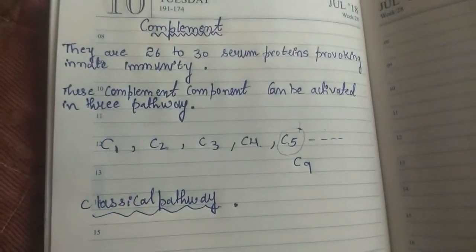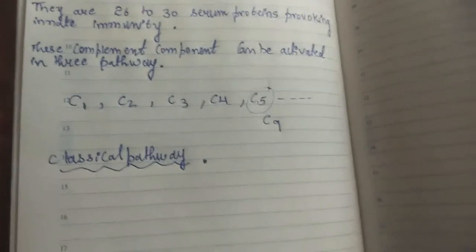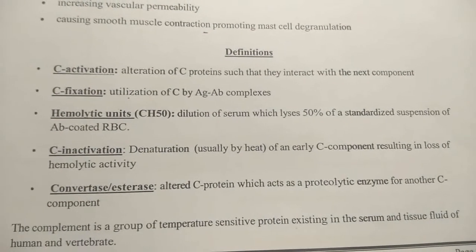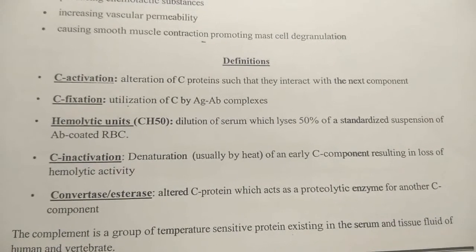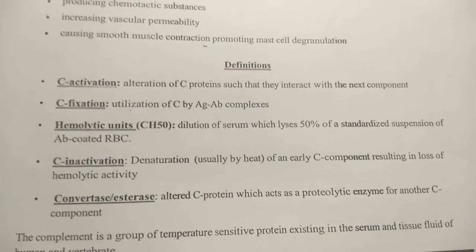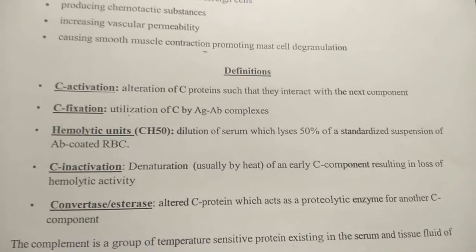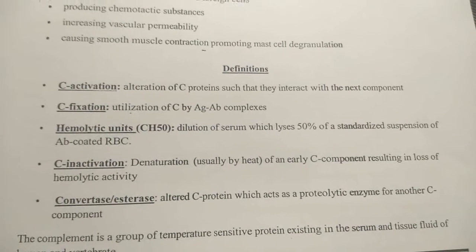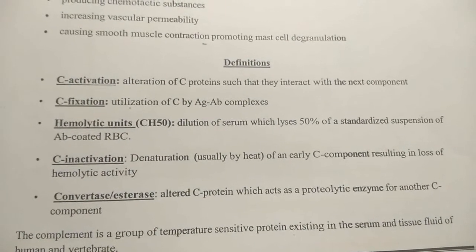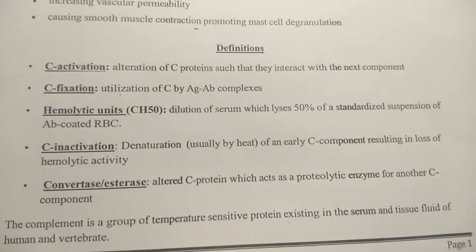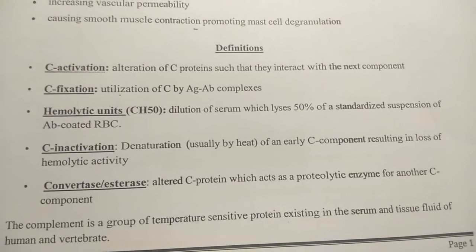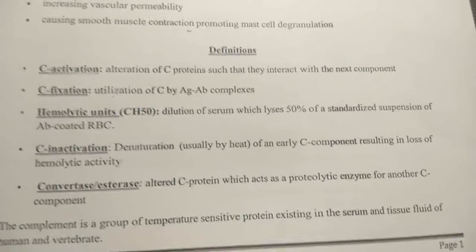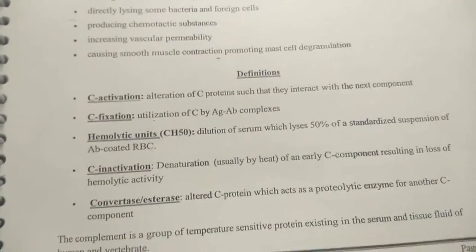Before starting, let me cover some common terminologies I'll be using repeatedly. First, complement activation means we are altering the complement proteins so they will interact with the next component — for example, if we alter C1, it will interact with C2. Next is complement fixation, which applies only to pathways dependent on antigen-antibody complexes, such as the classical pathway. Then there are hemolytic units — the dilution of serum that lyses 50 percent of a standardized suspension of antibody-coated red blood cells.